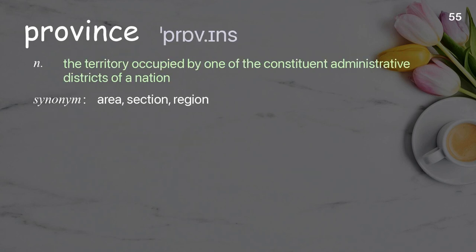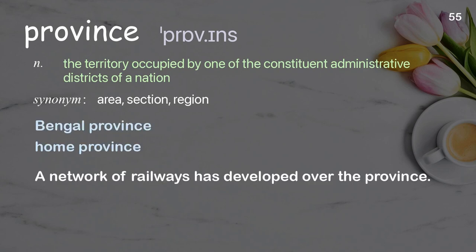Province: The territory occupied by one of the constituent administrative districts of a nation. Examples: Bengal province, home province. A network of railways has developed over the province.